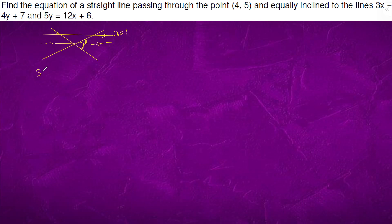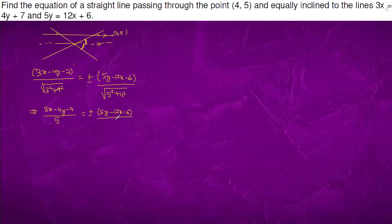So the equation of line is 3x minus 4y minus 7 upon root under 3 square plus 4 square equals to plus minus 5y minus 12x minus 6 upon root under 5 square plus 12 square, which is 3x minus 4y minus 7 upon 5 equals to plus minus 5y minus 12x minus 6 upon 13.